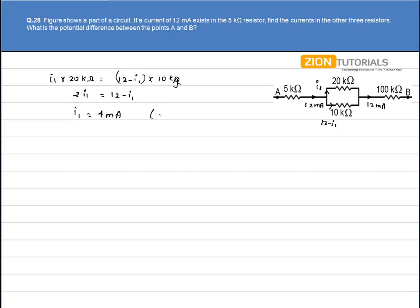So that is the current through the 20kΩ resistance. The current through the 10kΩ can be calculated by 12-4, which is 8mA. This is the current through the 10kΩ resistor.